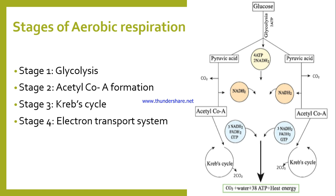Stage two is acetyl CoA formation. This stage also takes place in the cytoplasm of the cell. From each mole of pyruvic acid we get one acetyl CoA, one molecule of carbon dioxide, and one molecule of NADH₂. You can see the flowchart here where it is directly given. So in stage two, acetyl CoA formation, we get acetyl CoA from each mole of pyruvic acid, along with NADH₂ and carbon dioxide.